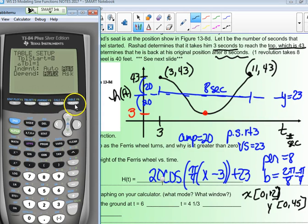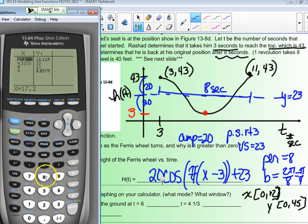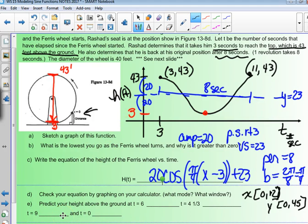The questions down here say, predict your height at six, four and a third, nine, and zero. You can trace all of those. Especially if you have the table set to ask. So I got 8.9, 33, 23, and 8.9.